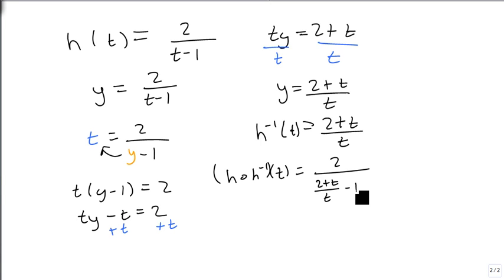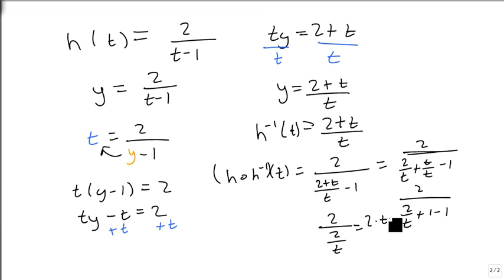That looks a little bit tricky, but remember, we can separate this out. So this is 2 over 2 over t plus t over t minus 1. t over t is 1. Plus 1 minus 1 goes away, so I'm left with 2 over 2 over t, which is equal to 2 times t over 2, which divides out, and we're left with just a t. So this is, in fact, our answer, since we got the input variable all by itself.